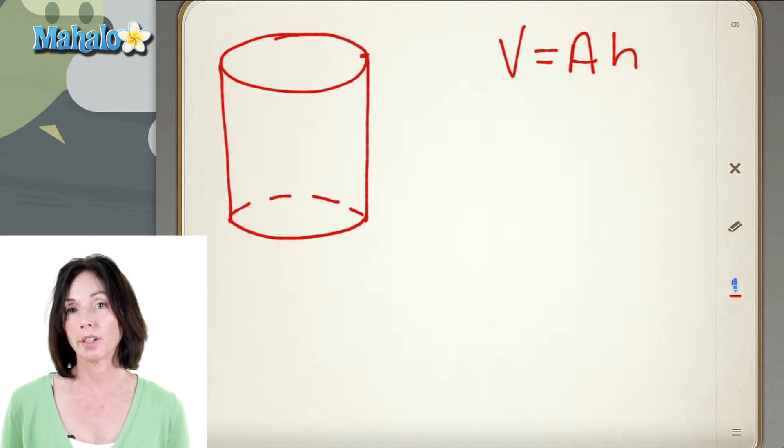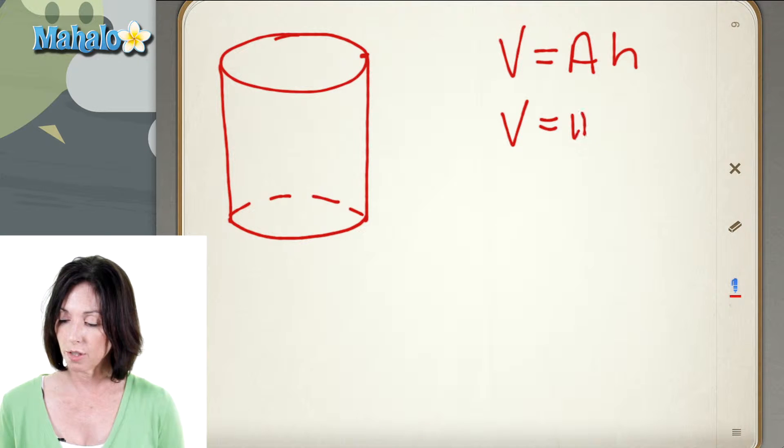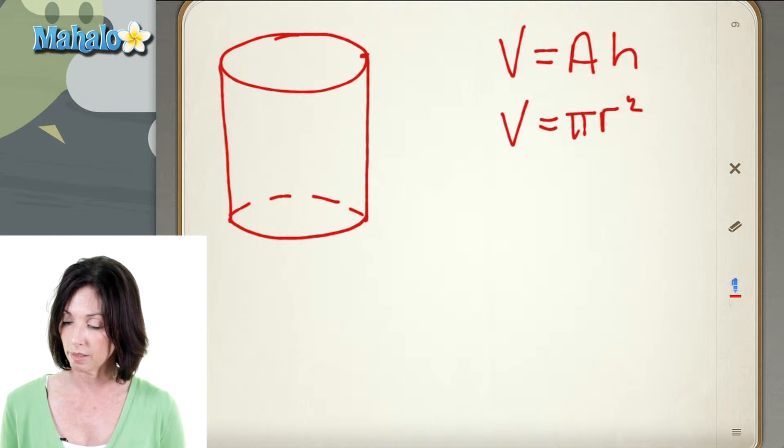Now, for a cylinder, the base is circular. So we could rewrite the volume formula as pi r squared, because pi r squared is the area of a circle, which is the base on the cylinder, multiplied by the height.